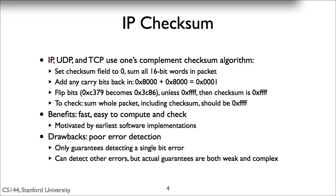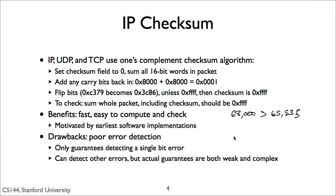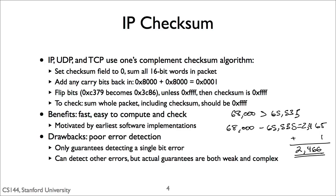Let's start with a checksum. IP, UDP, and TCP use one's complement checksums. This means they add up the packet using one's complement arithmetic, a version of binary arithmetic some older computers used — most today use two's complement arithmetic. The algorithm is simple: you start by setting the checksum field of the packet to zero, then add every 16-bit word in the packet. Any time you have to carry because the sum is greater than 2^16 or 65,535, you carry the bit back in. So 60,000 plus 8,000 is 68,000, minus 65,535 plus 1, or 2,466. Once you've added up the complete packet, flip the bits in your sum and make this the checksum of the packet.